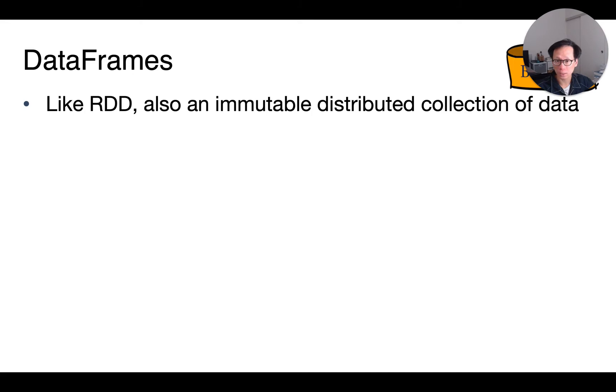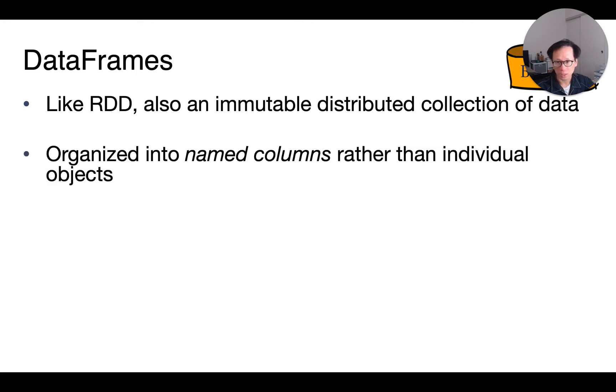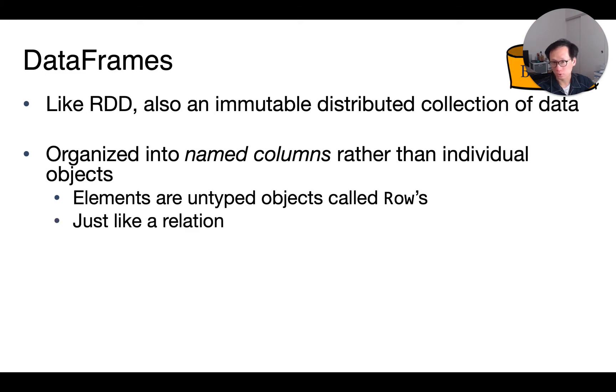Data frames are like RDDs in that they are immutable. But unlike an RDD that can store any object, objects stored in data frames are called rows and they have attributes called columns. This is very similar to relations.